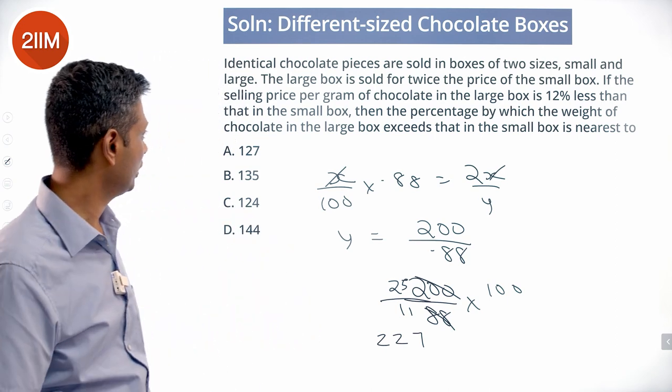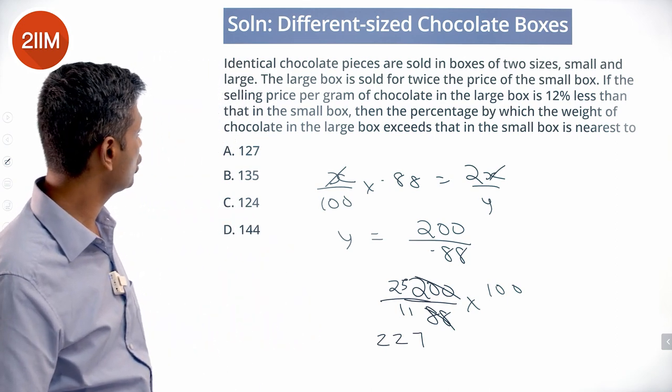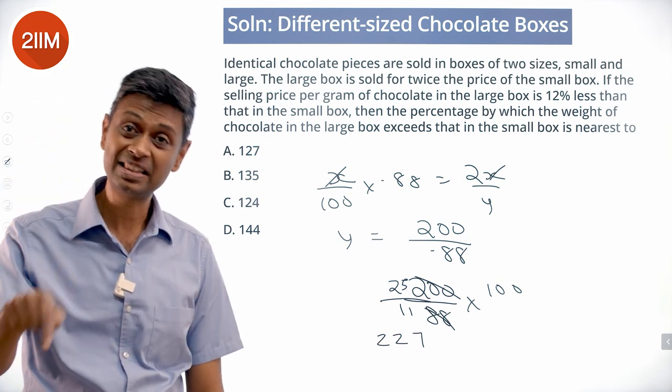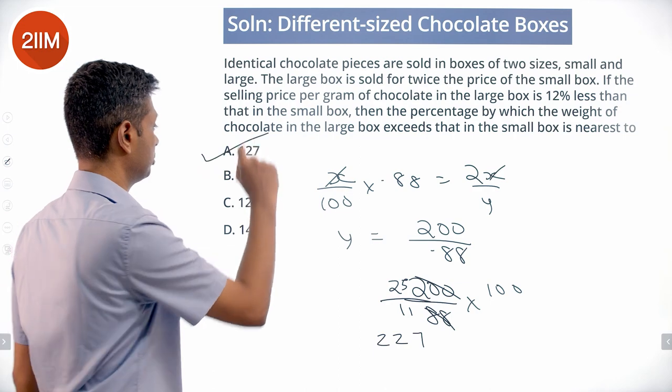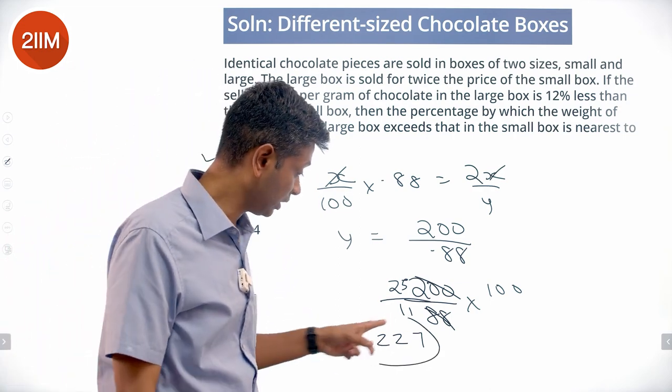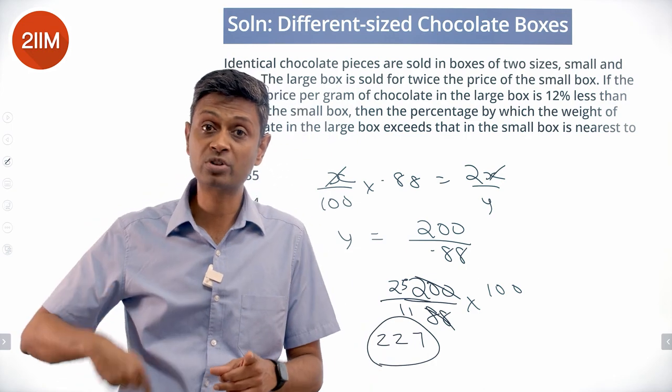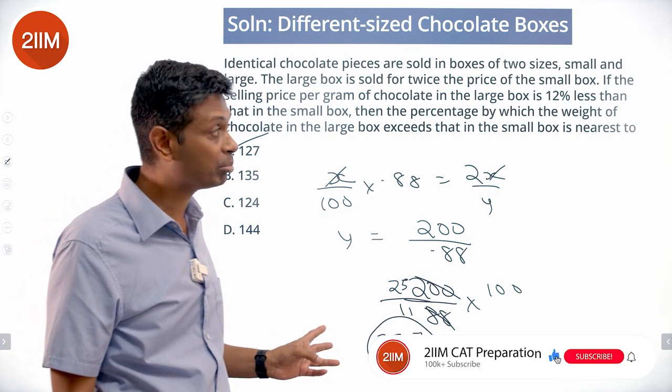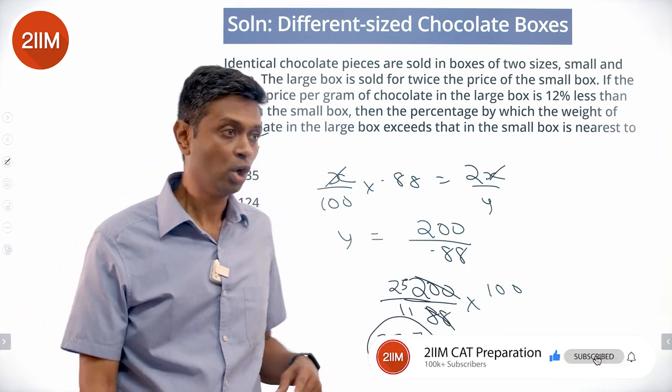So by what percentage? The percentage by which the weight of the chocolate in the large box exceeds that of the small box is 127 percent. This calculation, this question, I made a huge blunder. I found the answer to be 227, I didn't find it in the choices, then kept doing the question over and over again, which is a shame really.